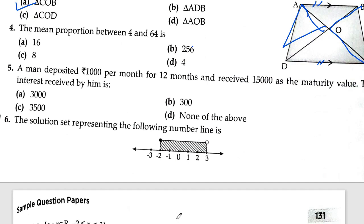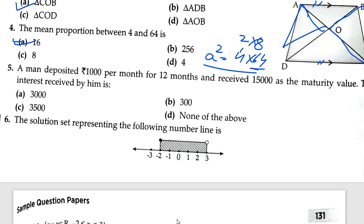The fourth one: what is the mean proportion between 4 and 64? You find A squared equals 4 into 64. Solving: 2 times 8 gives 16, so 16 is the correct answer. The fifth question: a man deposits rupees 100 and after 12 months receives 15,000 as maturity value.